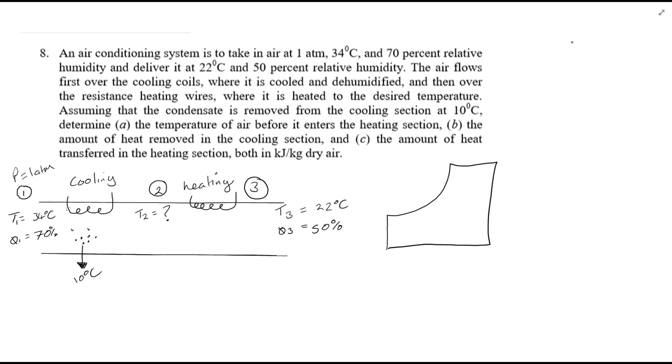Okay, question eight from example sheet one. Let's jump straight into it. We are looking for the temperature of air before it enters the heating section, so we're interested in this temperature here. Process one to two is cooling and also dehumidifying. You'll see here it starts around point one, comes through cooling and dehumidification to point two.